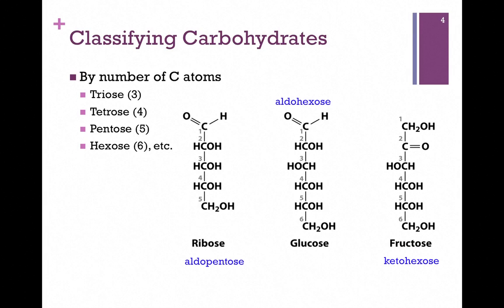We can also classify carbohydrates by the number of carbon atoms. A triose has three carbons, a tetrose four, a pentose five, a hexose six, and so forth. We can even combine those two terms: ribose would be an aldopentose because it has an aldehyde group and five carbon atoms. Similarly, glucose would be an aldohexose, and fructose would be a ketohexose.